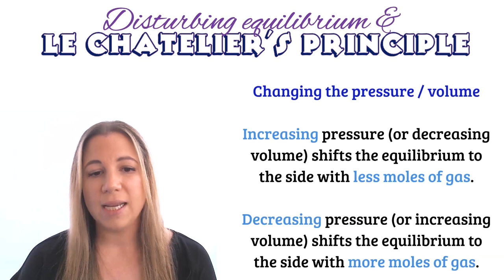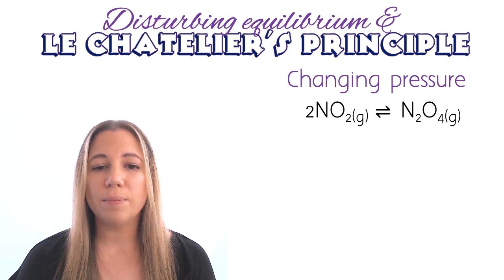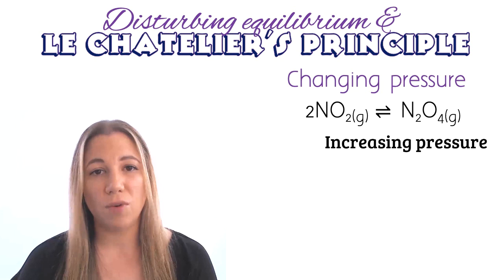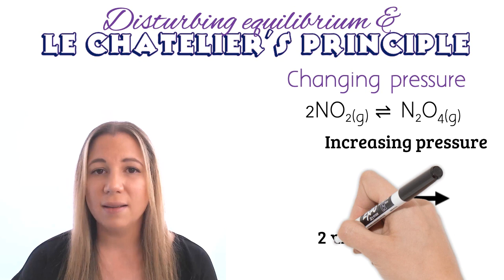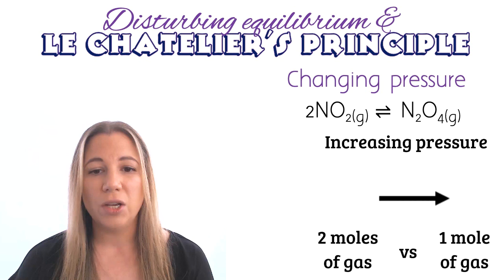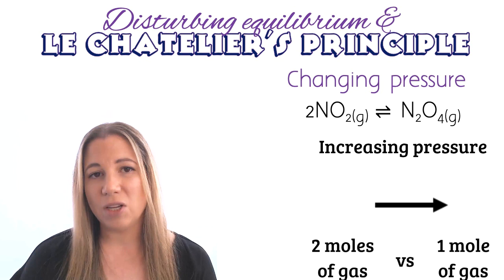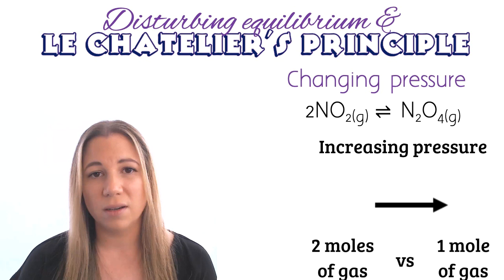Consider the following reaction: nitrogen dioxide gas reacting with itself to form dinitrogen tetroxide. By increasing the pressure on the system, this will cause the equilibrium to shift towards the right, to decrease the amount of pressure by decreasing the amount of gas. The left-hand side has two moles of gas, while the right-hand side only has one mole of gas. So the system is trying to use up the gas by favouring the forward reaction.